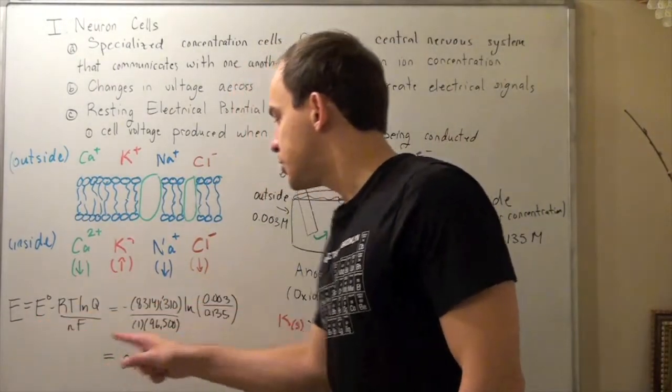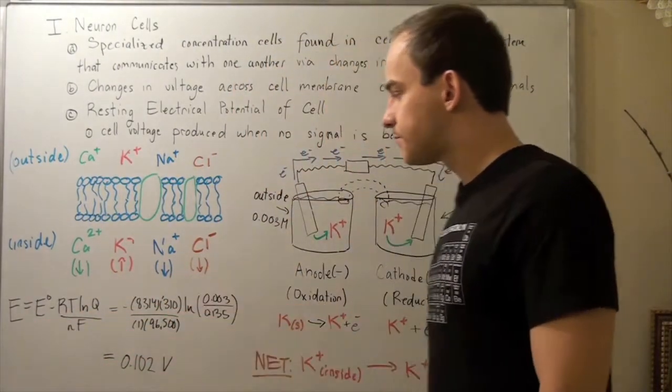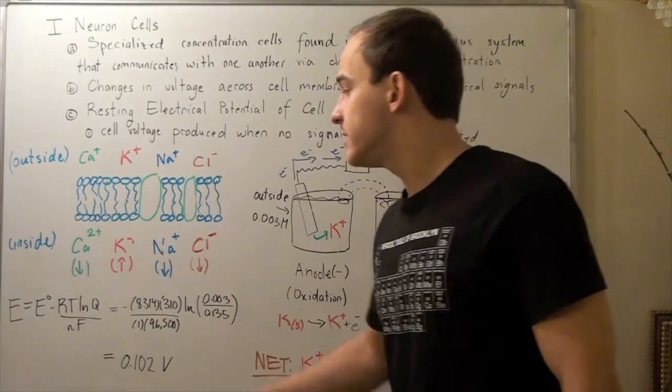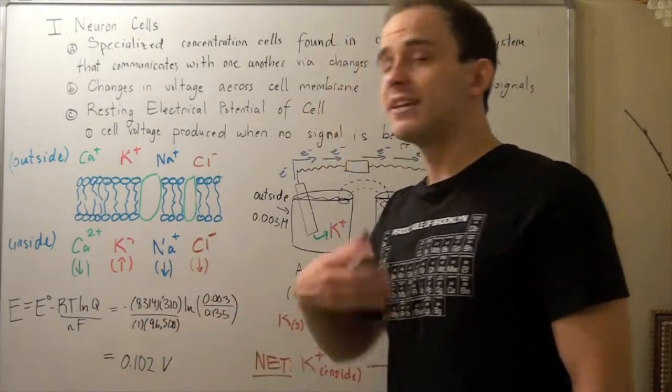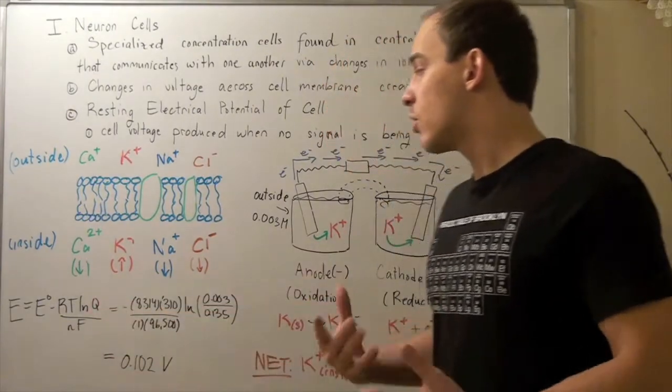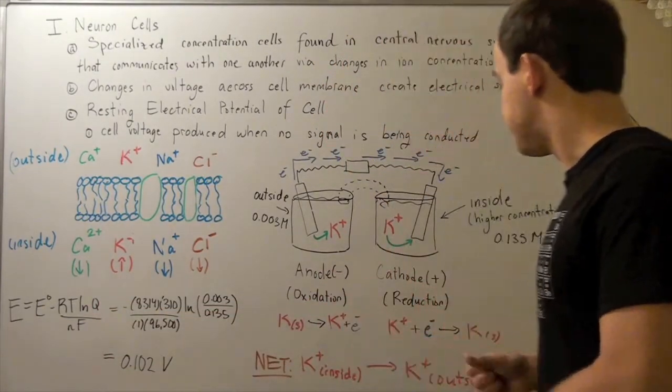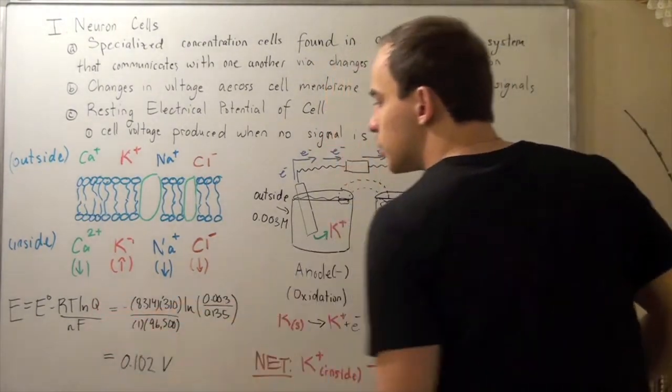That means our cell voltage is just simply this whole guy, where R is our gas constant, T is our temperature, N is the moles of electrons, F is Faraday's constant, and Q is our expression. Now, let's look at Q first.